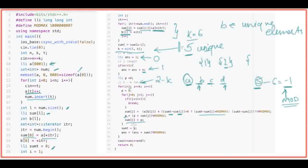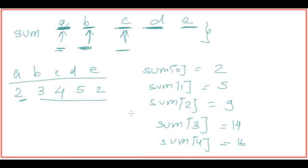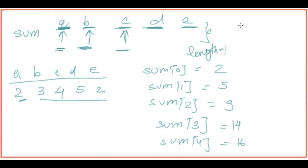For example, when generating subsequences of length two: sum[0] = (16 − 2) × count[a] = 14 × 2. For sum[1] it is (16 − 5) × count[b] = 11 × 3. The key insight is fixing an element at the current position and multiplying by the count of valid elements remaining.